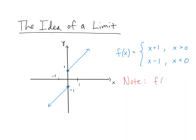So f of 0 is not defined. It doesn't make sense to talk about f of 0. The domain of this function is all real numbers except 0. Written in interval notation, that's from negative infinity to 0, union 0 to infinity. So we're excluding 0 from the domain of f.